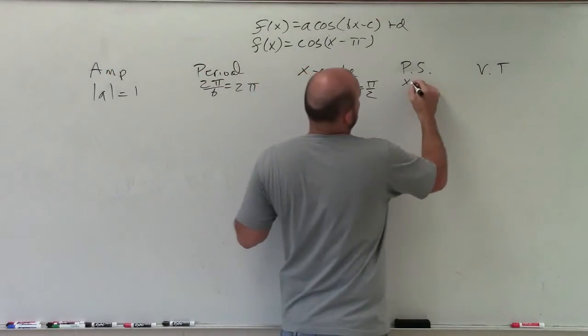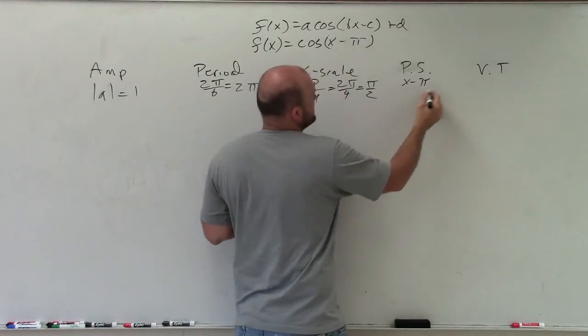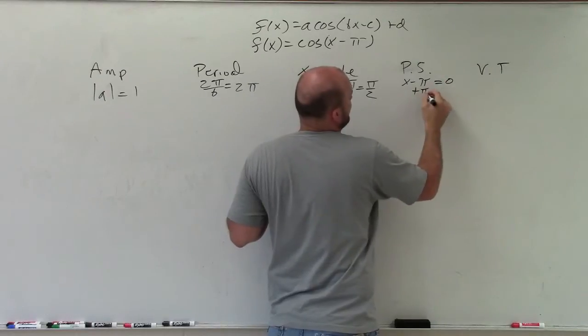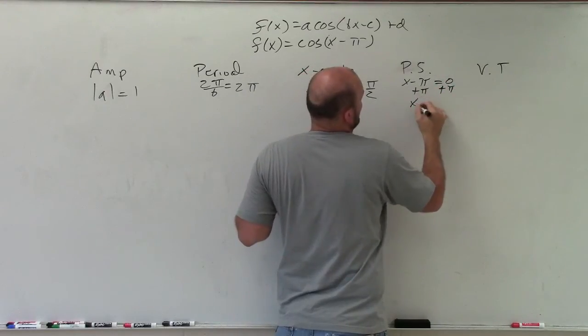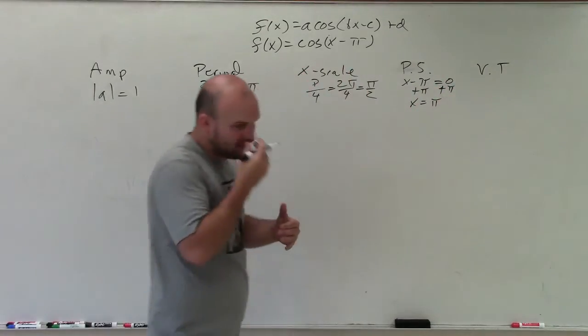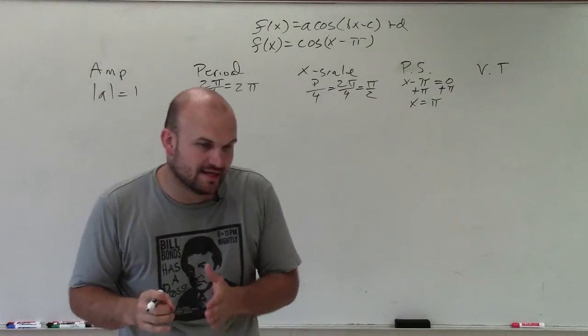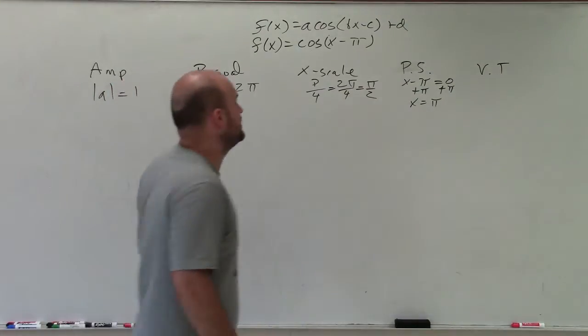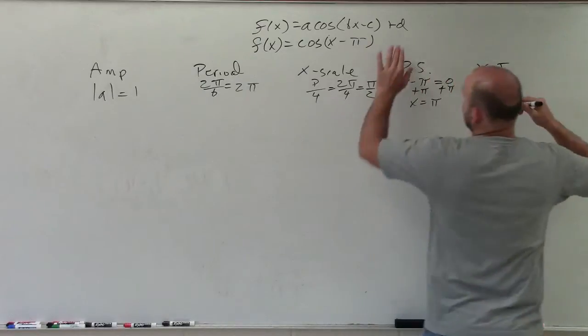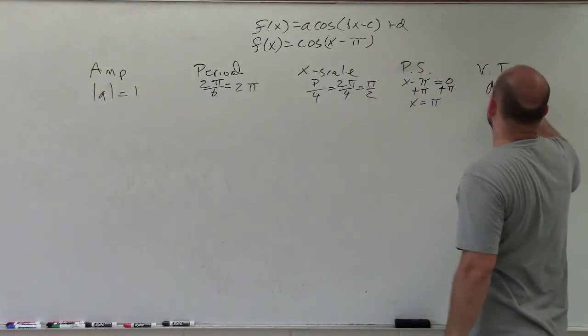In this case, to determine the phase shift, I'm just going to go x - π = 0, and then solve for x, x = π. So therefore, this tells me my graph has now been shifted π units to the right. And then my vertical transformation is going to be my d, which in this case is none.